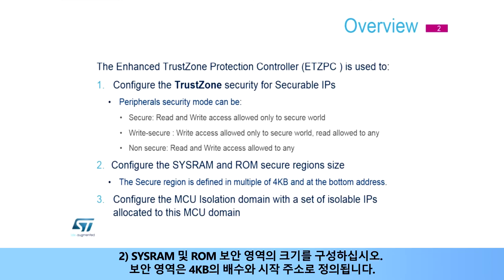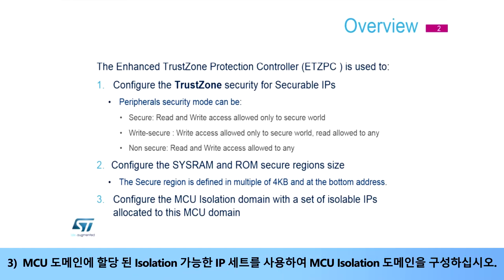Configure the SysRAM and ROM Secure Region Size. The secure region is defined in multiples of 4 kilobytes and at the bottom address. And configure the MCU Isolation Domain with a set of isolable IPs allocated to this MCU domain.